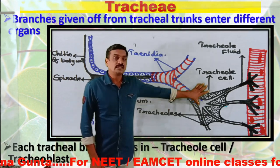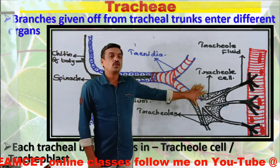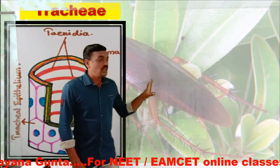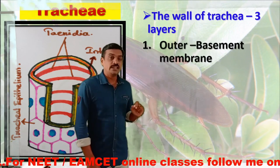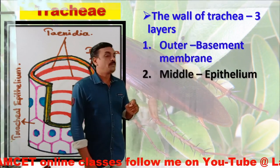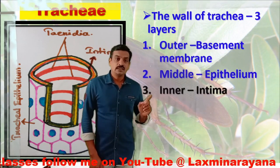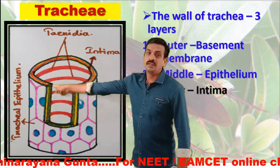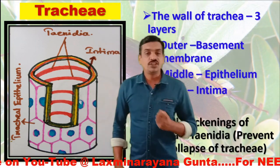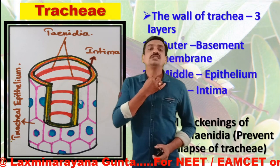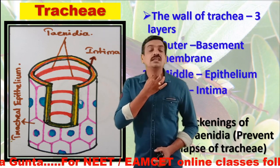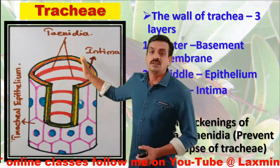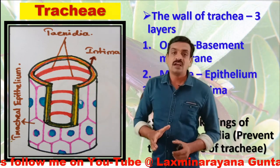Each tracheal branch ends in a tracheal cell or tracheoblast. The wall of the trachea consists of three layers: the outer layer is the basement membrane, the middle layer is the epithelium, and the innermost layer is the intima. The spiral thickenings present in the intima are called taenidia. These taenidia prevent the collapse of the trachea, just as C-shaped cartilage rings in our trachea prevent it from collapsing. Similarly, taenidia in cockroaches prevent the trachea from collapsing.